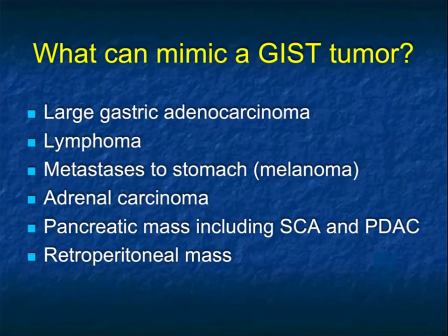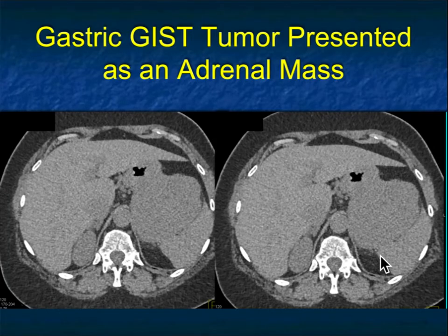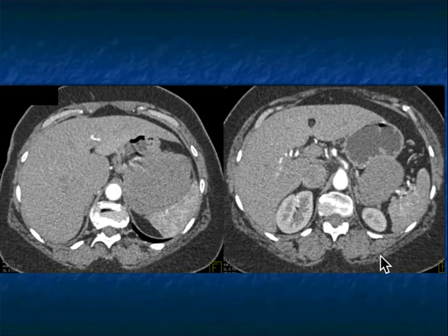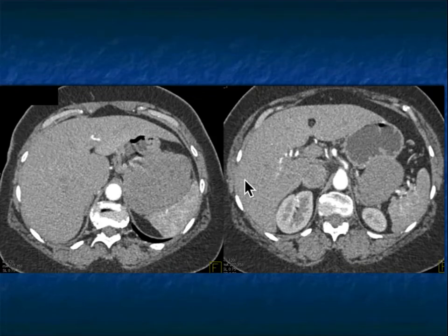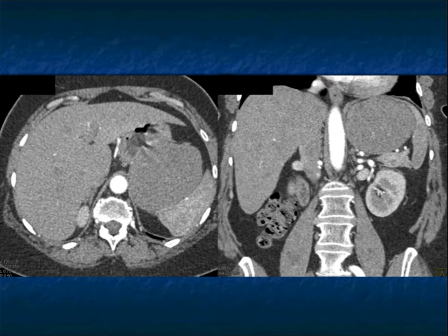We spoke a little bit about metastasis. We were also looking at this case — here's a large mass in the left upper quadrant. This was referred to our endocrine surgeon for a suspected adrenal carcinoma. You can understand why that's a possibility. But when you look carefully at the lesion, it's really related to the stomach, and in fact you can see a normal adrenal gland right there. This ends up being a large GIST tumor which simulated an adrenal mass.